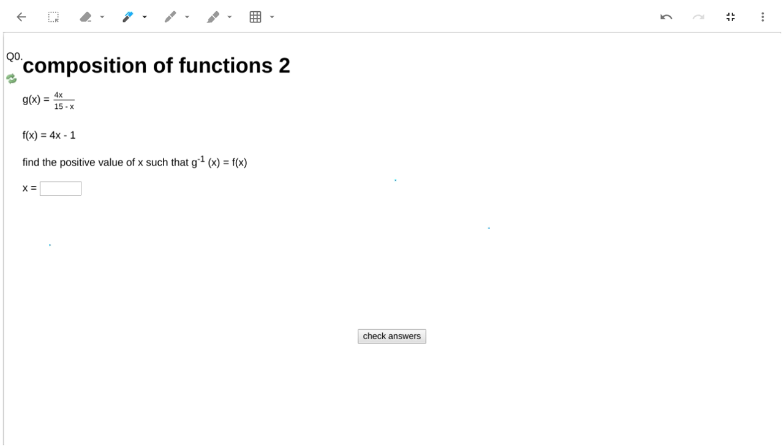Hi, this is a question here about composition of functions again, and we've got a g of x and an f of x, and it says find the value of x such that the inverse of g of x is f of x. That looks pretty nasty, and it looks pretty tricky to get the inverse function of g. So there is another way. I'm not saying it's the only way, but this is a nice little trick.